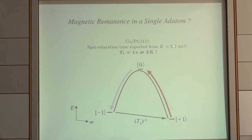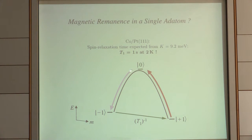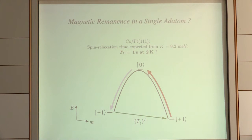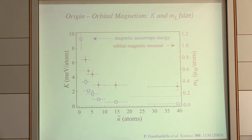Looking at this number, you can estimate how this would behave if the cobalt atom were a classical magnet that has to go over an activation barrier. The spin is one-half for this cobalt atom. If you have to go over this barrier through the spin zero state, the ground states are m equals plus one and minus one. If you had to go over this barrier, the lifetime of the magnetization would be about one second at 2 Kelvin — absolutely no problem for a measurement. So in principle, this should be a stable magnet. We published this about 12 years ago, and it really triggered an entire field, basically this discovery that single atoms have quite interesting magnetic properties.